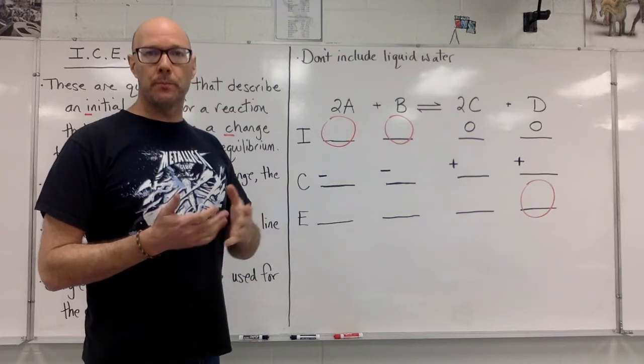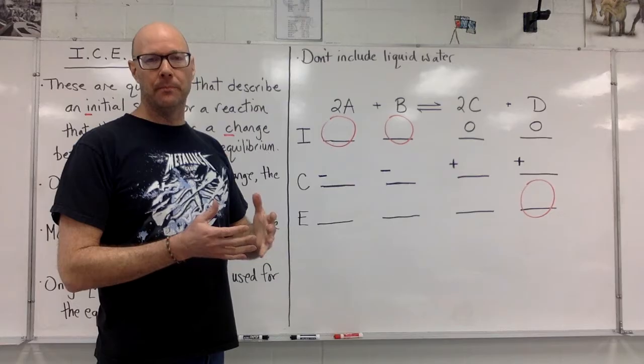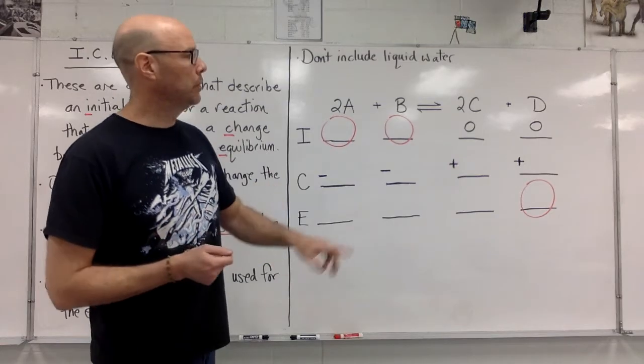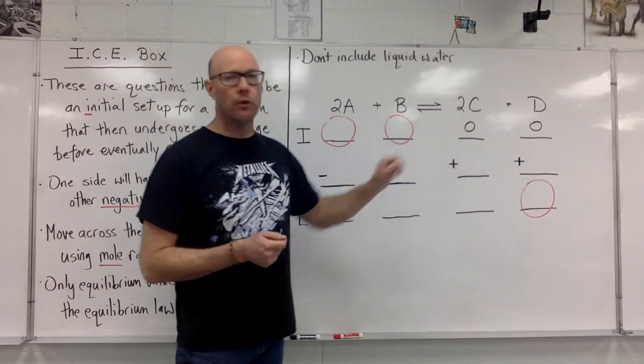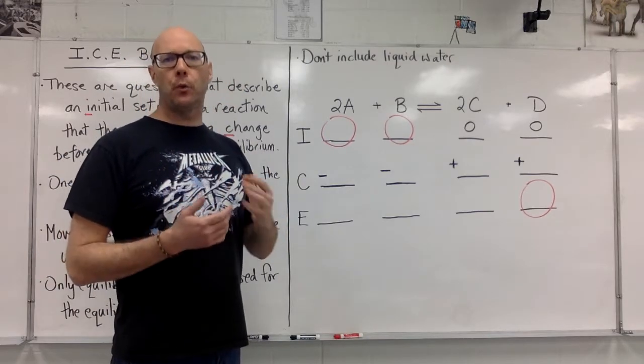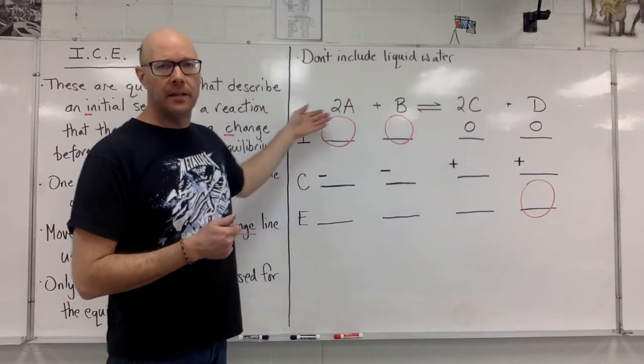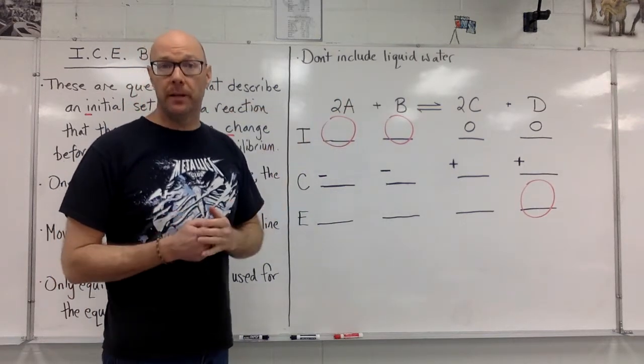The initial description of the question would not mention C and D, so the typical example has zero for those values. This means that if we interpret the question properly, the whole I line of the icebox we can fill in just based on the question.